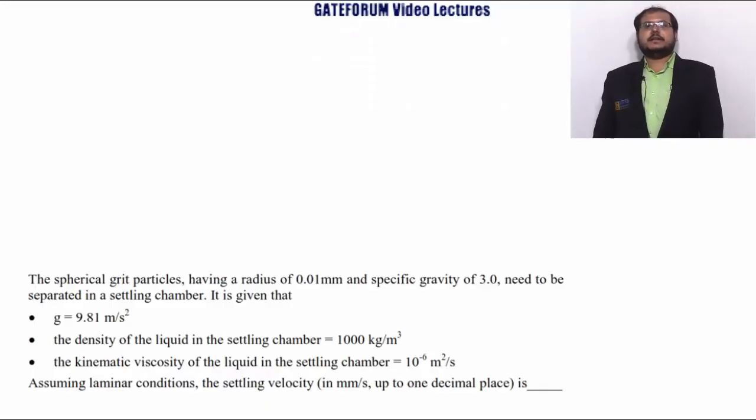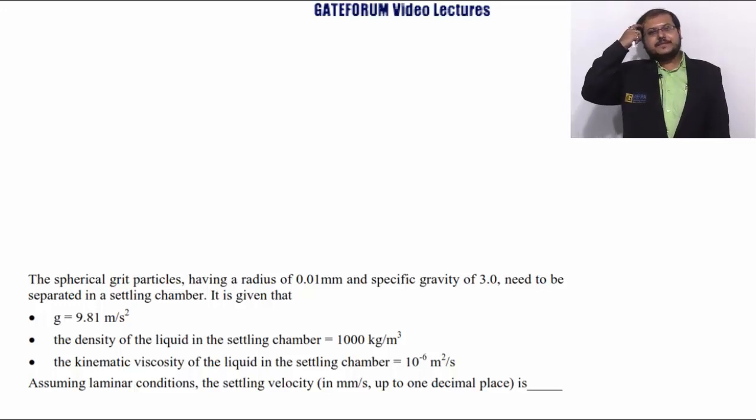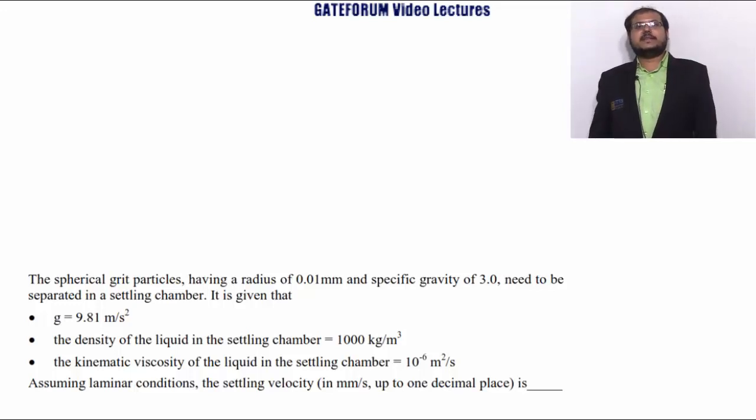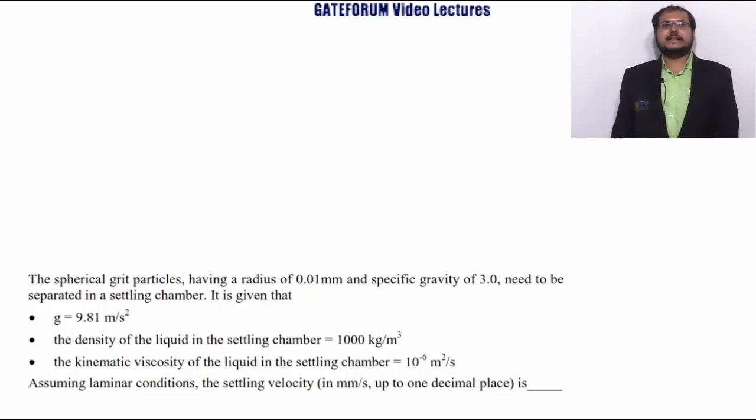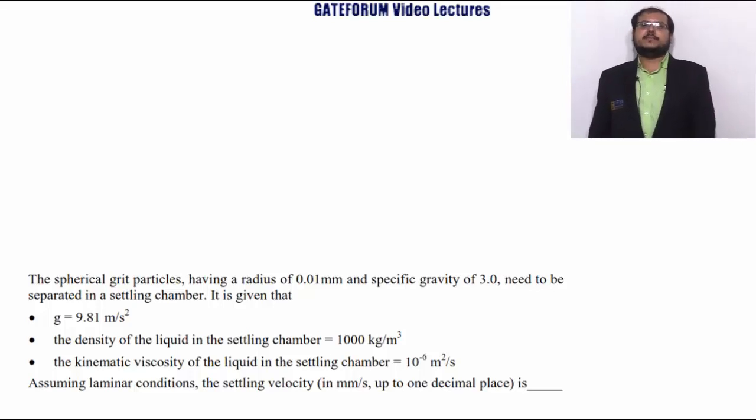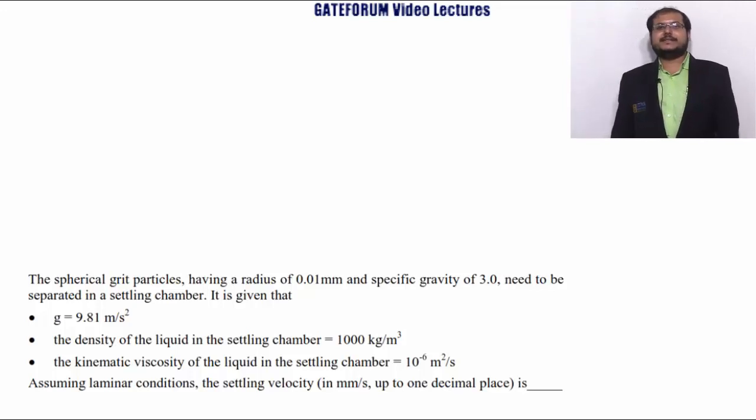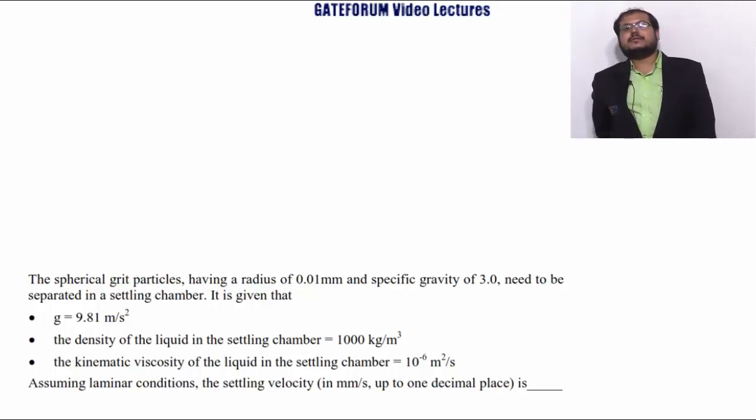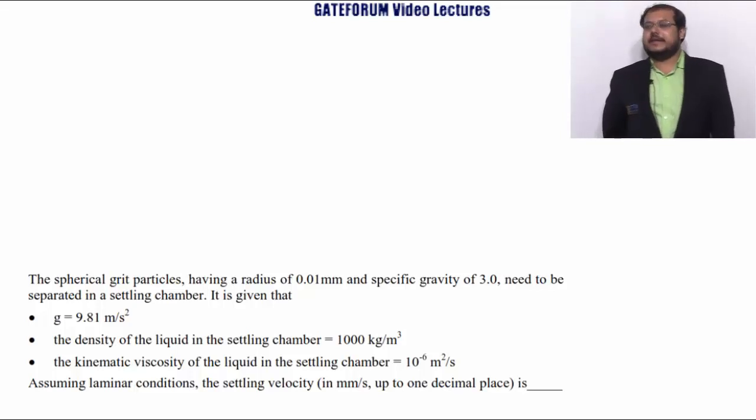A spherical grit particle having a radius of 0.01 mm and specific gravity 3 need to be separated in a settling chamber. It is given that g = 9.81 m/s², density of the liquid in the settling chamber is 1000 kg/m³, the kinematic viscosity of the liquid is 10^-6 m²/s. Assuming laminar flow condition, the settling velocity will be...